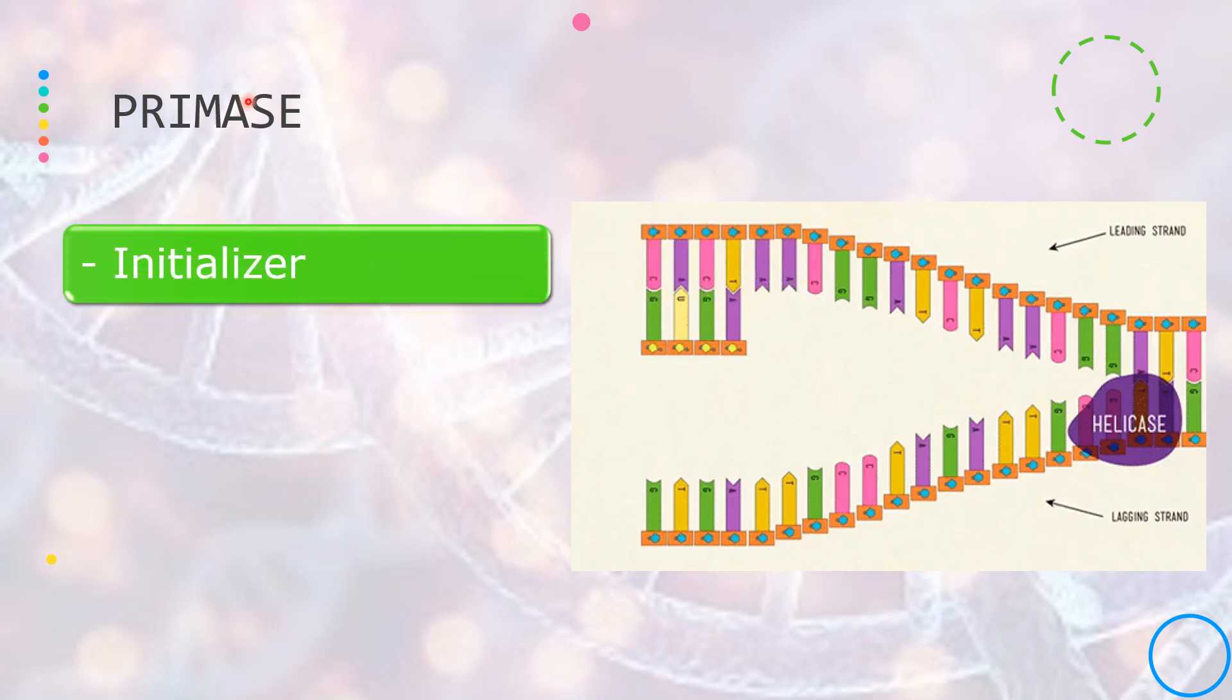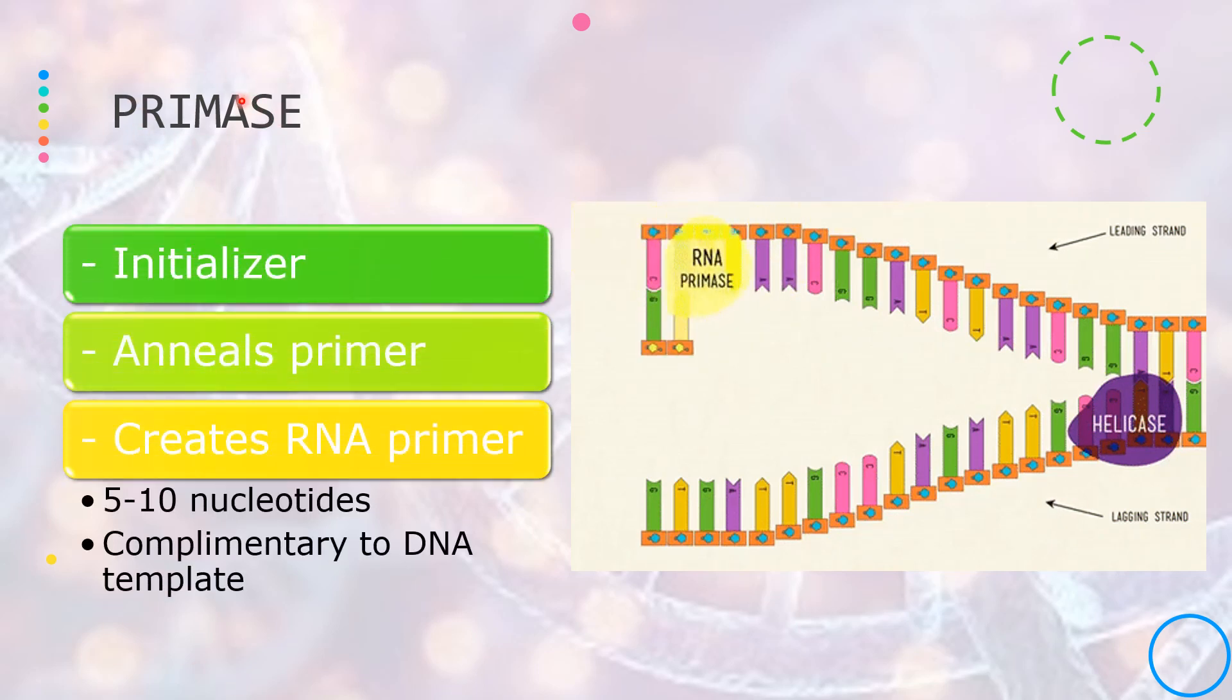The second enzyme is the primase. The primase is also known as the initializer because it is in charge of initializing or it is needed for the next step of DNA replication to happen.